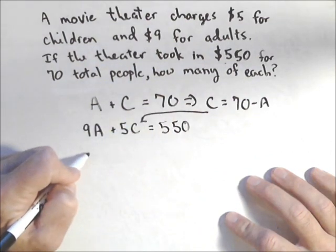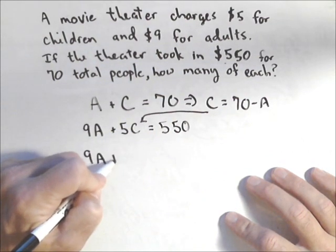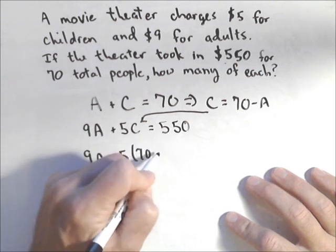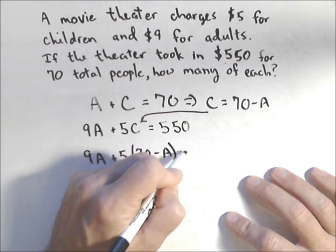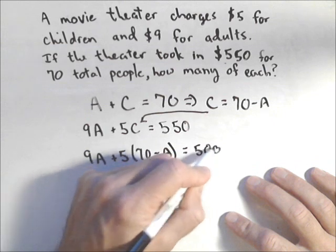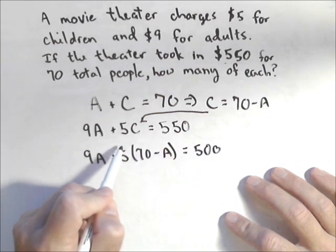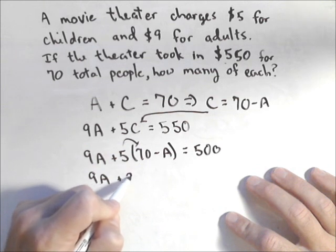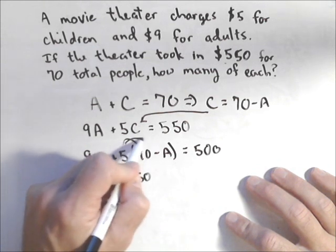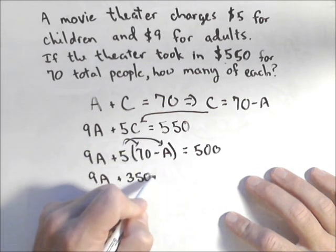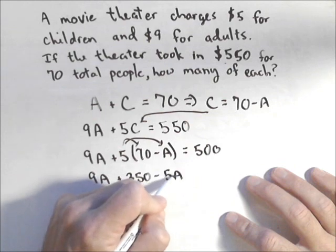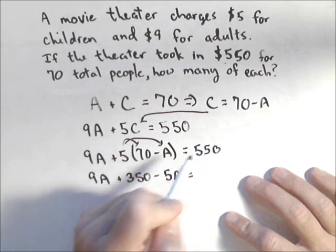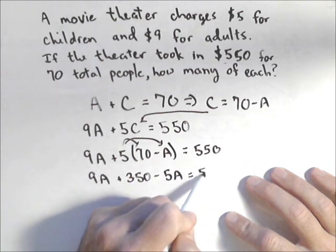I'm going to plug that in for my C down here. So, 9A plus 5 times (70 minus A), and this will give me an equation only with A in it, so I should be able to solve this for A. So, 9A plus 350 minus 5A equals 550.